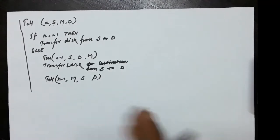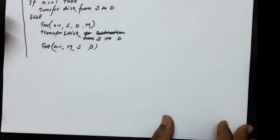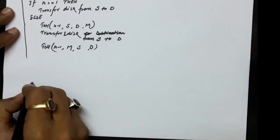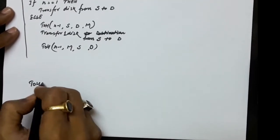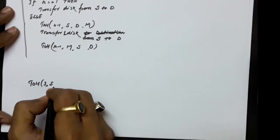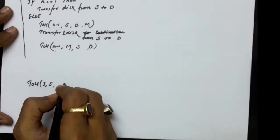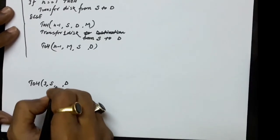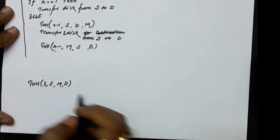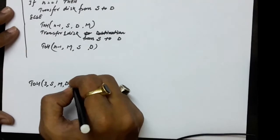This is the recursive solution for the Towers of Hanoi problem. If we have one disk only, transfer it to the destination directly. If not one disk, it is a three-step process: transfer n minus 1 disks from source to mediator, then one disk from source to destination, then n minus 1 disks from the mediator to the destination. We have a process of transferring three disks from source to destination taking M as a mediator.